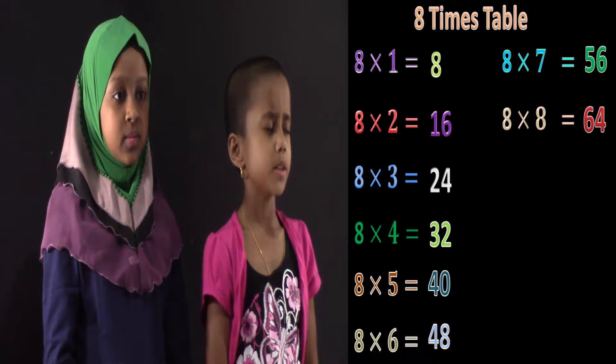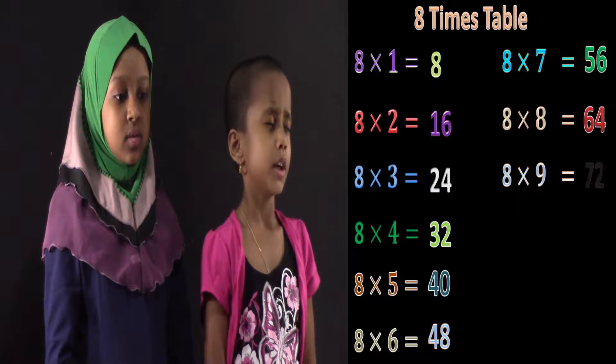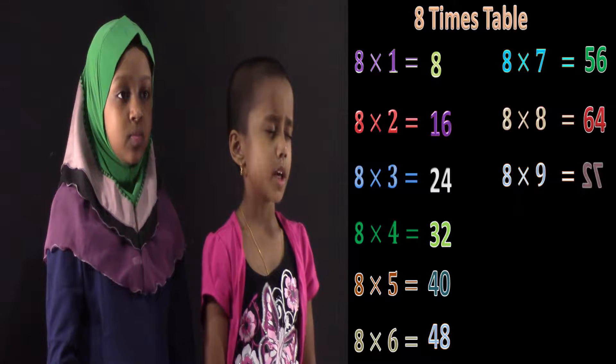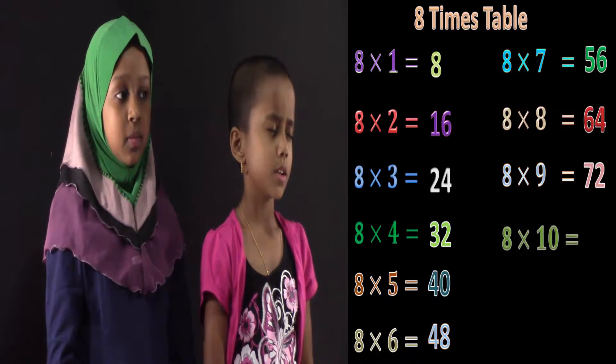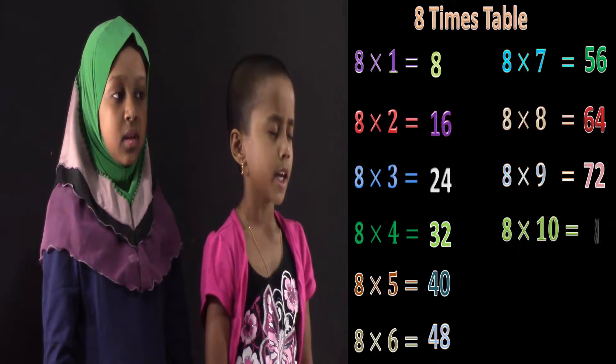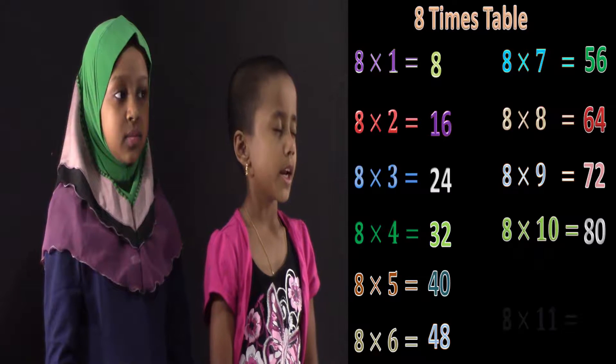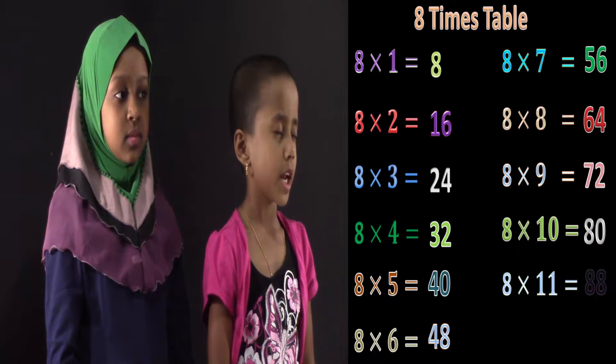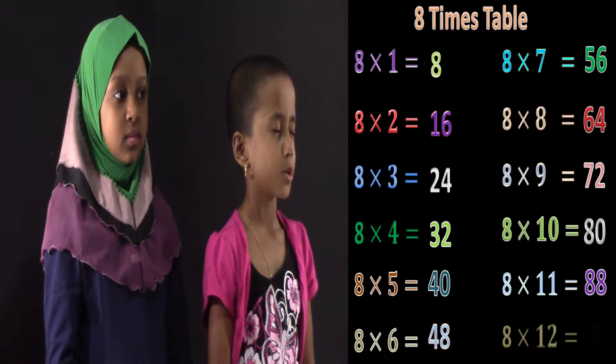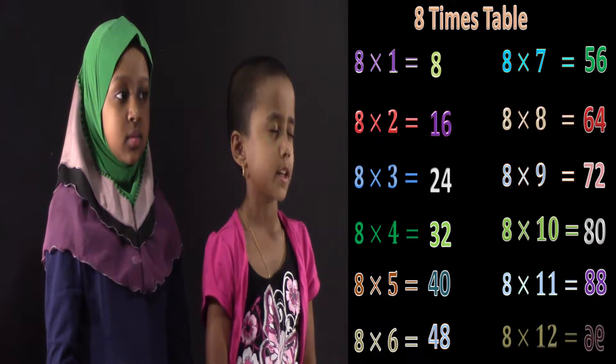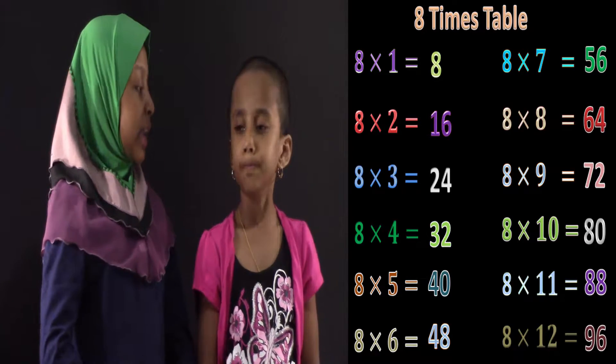8x8 equals 64. 8x9 equals 72. 8x10 equals 80. 8x11 is 88. 8x12 is 96.